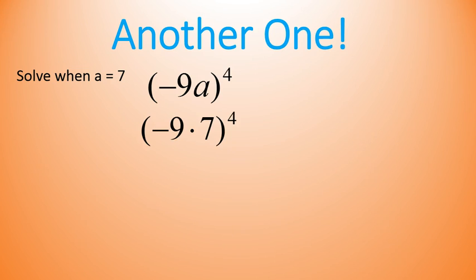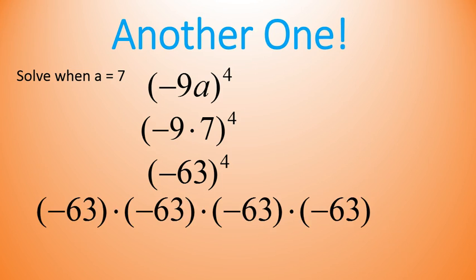Welcome back. We substitute a equals 7 into there. Now it's negative 9 times 7. We simplify what's inside the parentheses first, giving us negative 63. Now we have to multiply our base of negative 63 times itself four times.